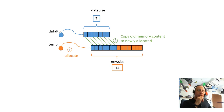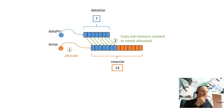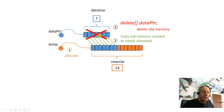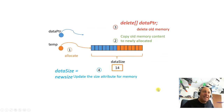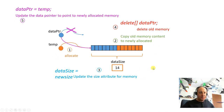Armando's follow-up: even after giving the new memory to dataPtr, don't you delete temp? No — there's no separate memory to delete. You deleted dataPtr's old memory. You copied that into new memory. Then you made dataPtr point to it. Now dataPtr and temp point to the same place. If you delete temp, the dataPtr memory is gone.